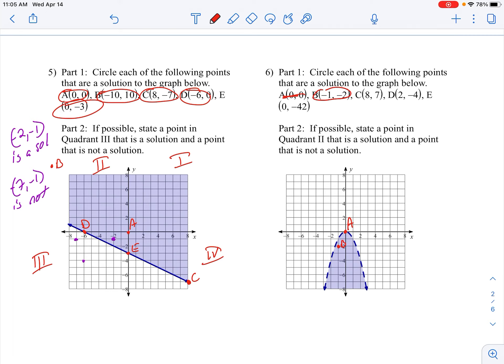8, 7 is clearly not. It's way up here. That's a no. Now, 2, negative 4 is right on the boundary line. And because it's on the boundary line and that boundary line is dashed, it is not a solution.